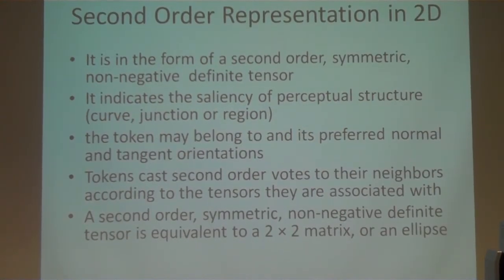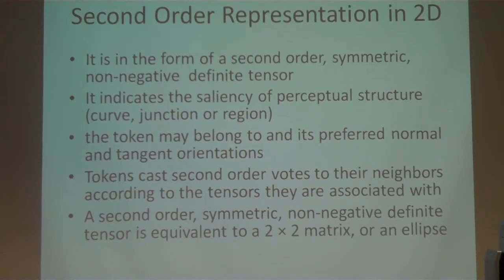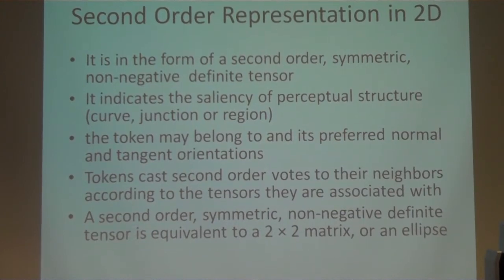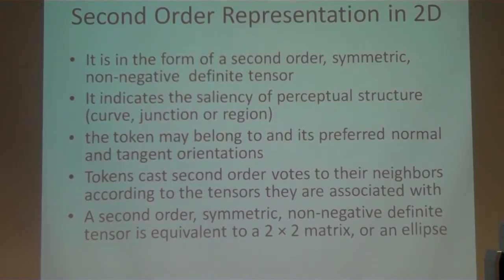Before I start discussing tensor voting in detail, two terms will come up that I want to discuss: eigenvalues and eigenvectors. I just want to know if you are familiar with these terms. If you are familiar, I can go ahead; otherwise I prepared a small presentation on what these things are. Because like a vector has two things — magnitude and direction — similarly, a tensor has eigenvalues and eigenvectors, because a tensor is more in the form of matrices.